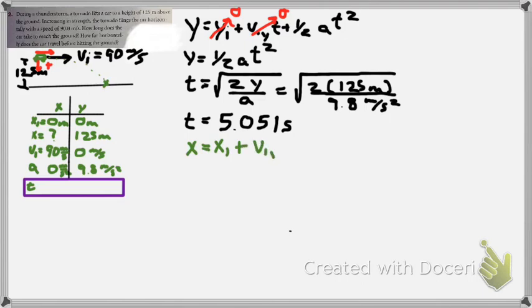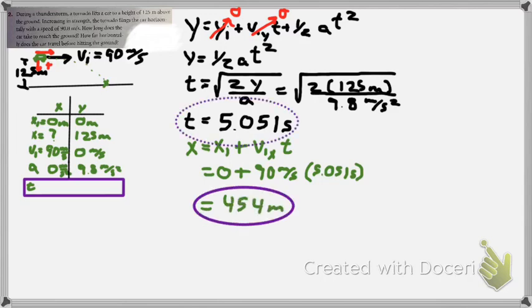Now we're going to move to the X direction and use X equals X initial plus V_IX times T. We're just going to use our initial velocity in the X direction and our time in the air to solve for how far this thing goes. And it's going to go 90 meters per second times 5.051 seconds. And it will go 454 meters in the air. And it was in the air for 5 seconds.